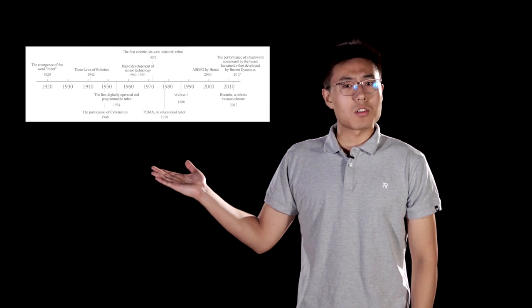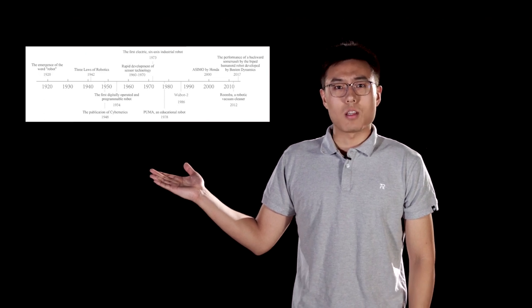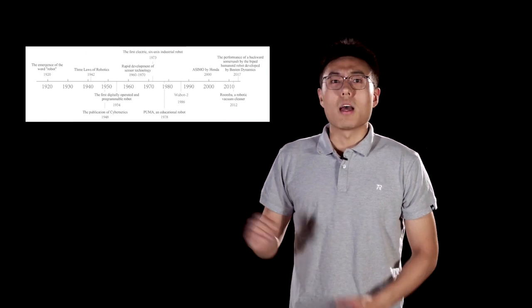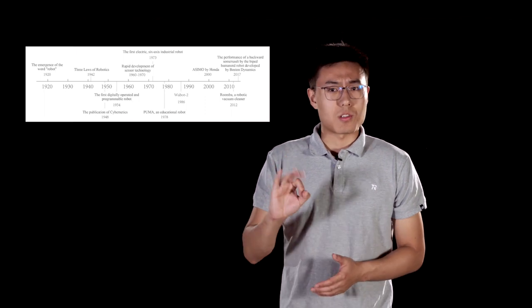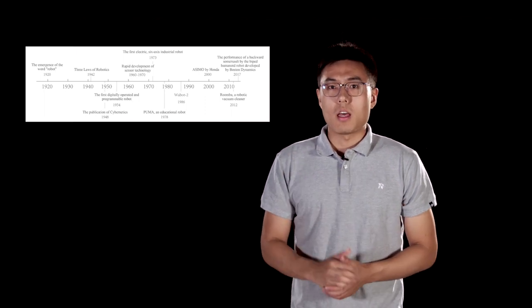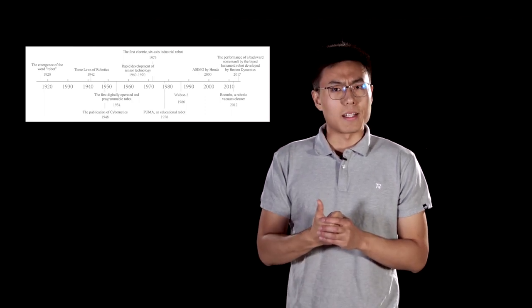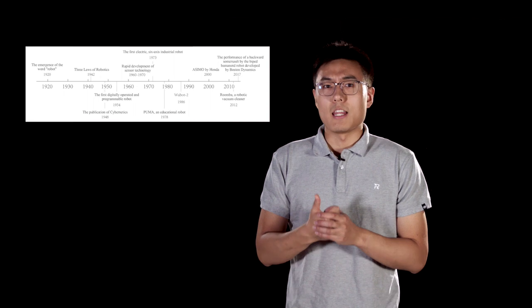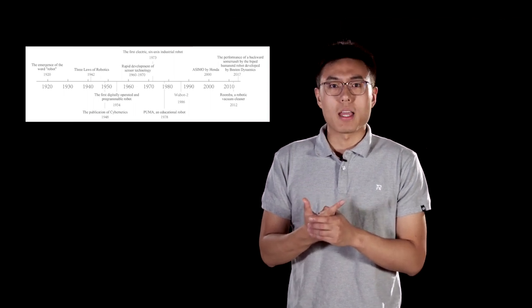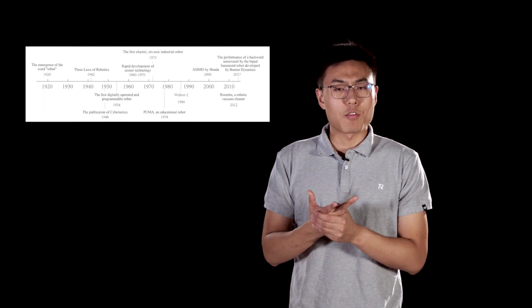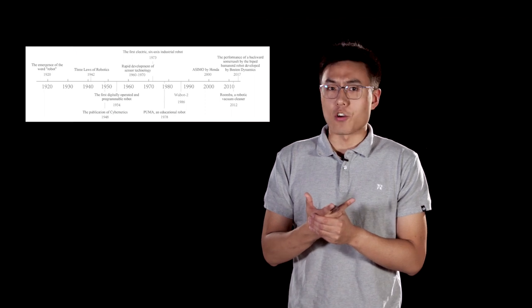Robots have existed for less than a century. This timeline shows the evolution of robots. According to this timeline, the evolution of robots can be roughly divided into three stages: the origin of robots in the 1920s, the fast development of robots in the late 20th century, and modern robotics in the 21st century.